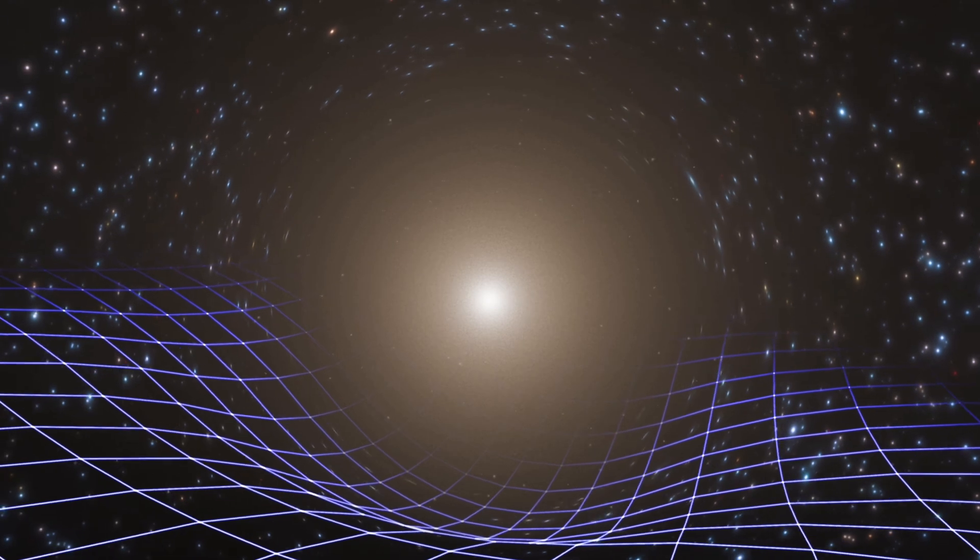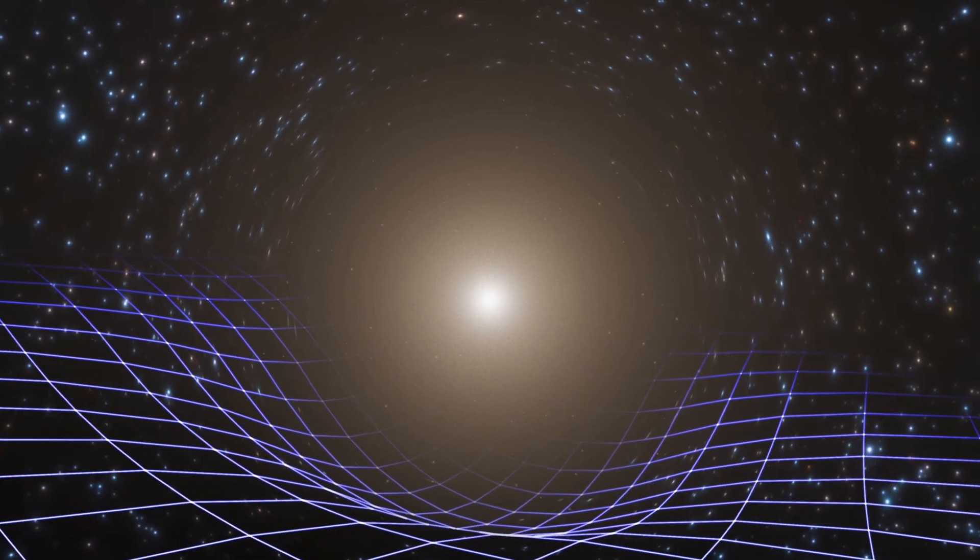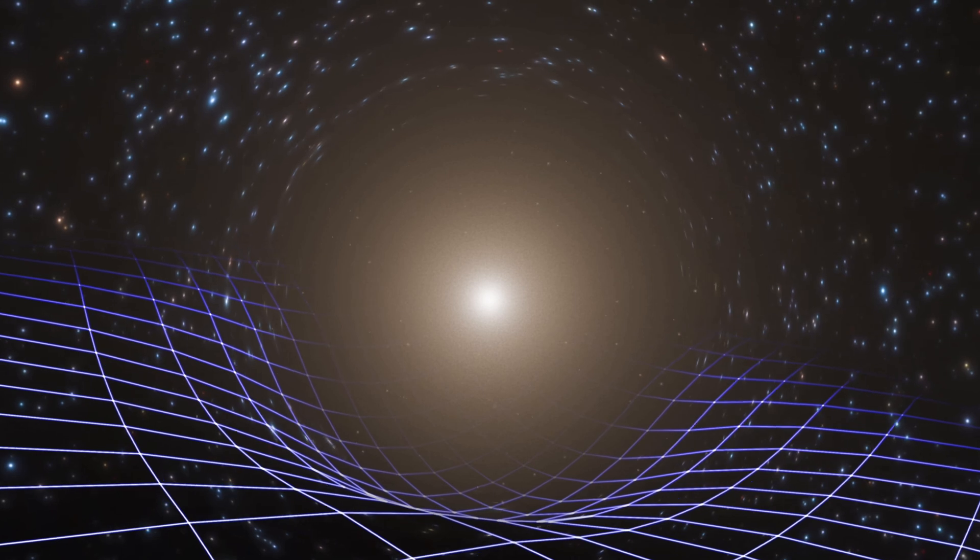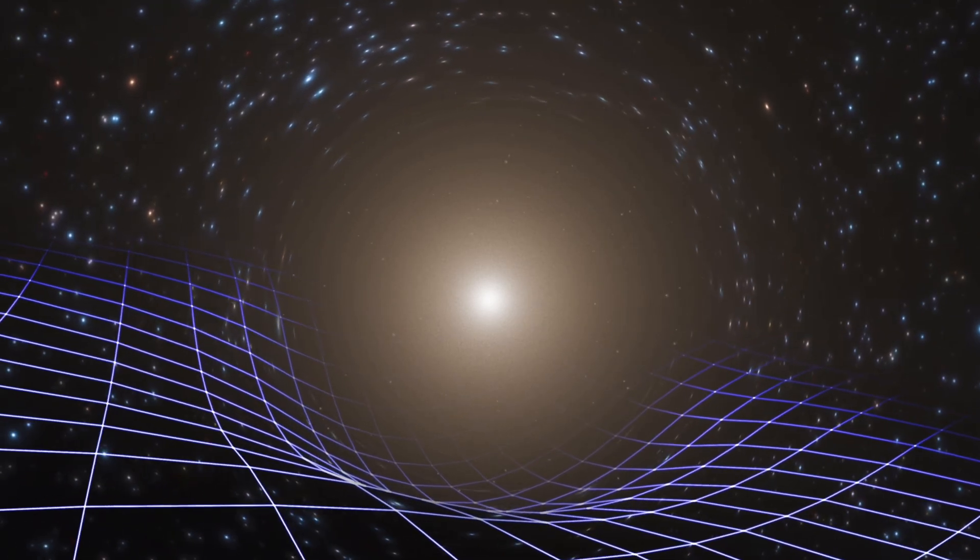When space-time is flat, these paths are straight lines. However, in the presence of massive objects, these straight paths appear curved to us.